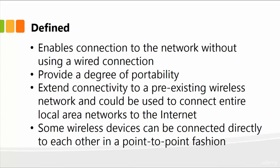A simple definition of what a wireless network is: it basically enables connection to the network without using a wired connection, so there are no cables involved. It provides a degree of portability, is flexible, and extends connectivity to a pre-existing network. It can be used to connect entire local area networks to the internet — for example, if you have 500 users working in a single office, all needing internet access.